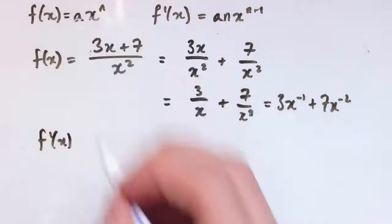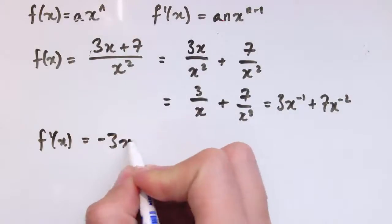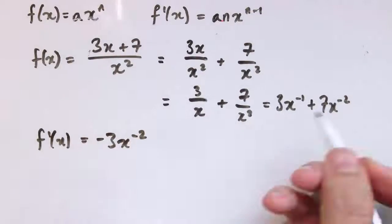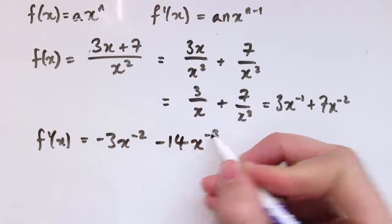So, for this rule to apply, just like the ones you've done before now, so it's minus 3x to the minus 2 and minus 14x to the minus 3.